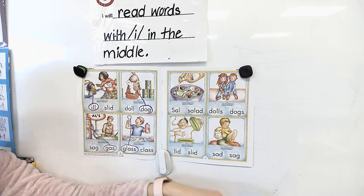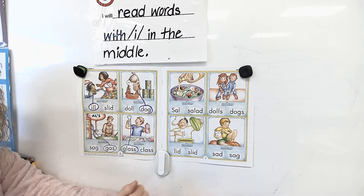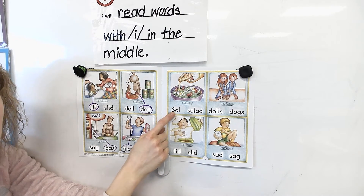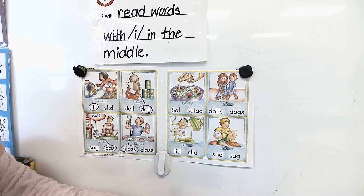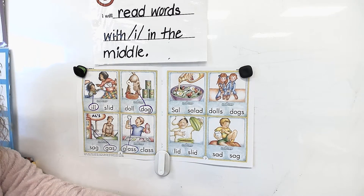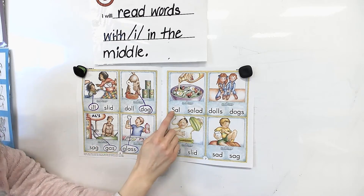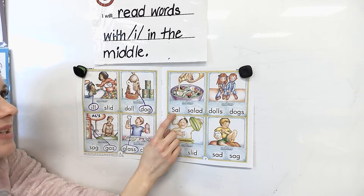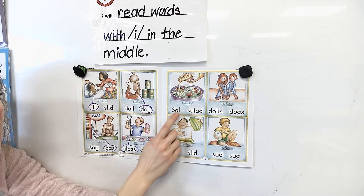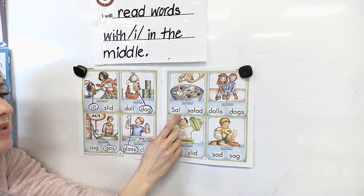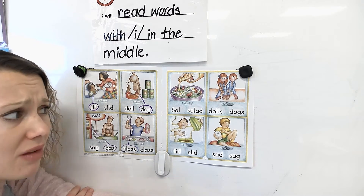We are meeting our learning target — we are reading words with the ih sound in the middle, like slid — ih, ih. We're going to get two more down here. We're going to go to the top left on the right page. What do you see here in that picture? What is that? Lots of people like to eat that. I like it. This is salad. Let's read this word — S-A-L. Is this a picture of our super kid Sal? No.